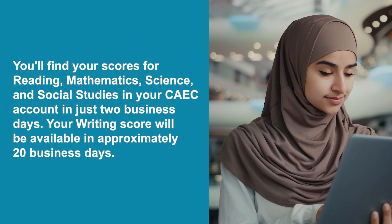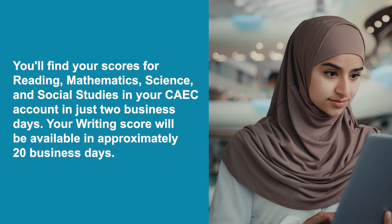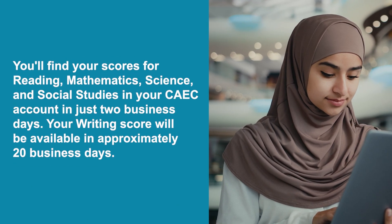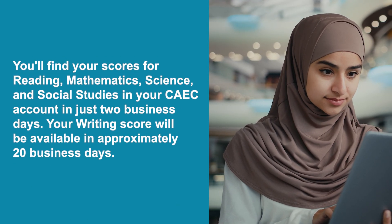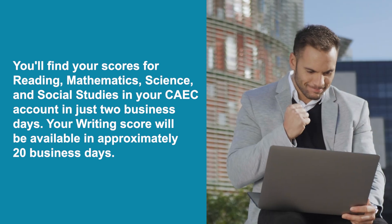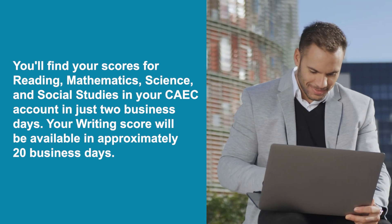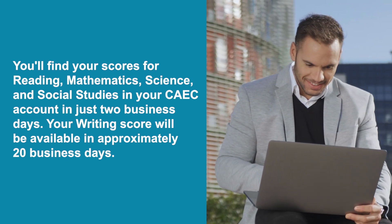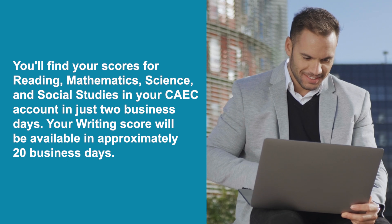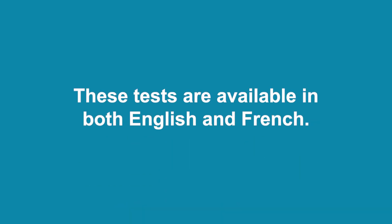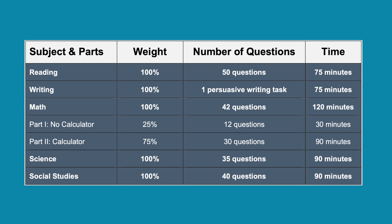You'll find your scores for reading, math, science, and social studies in your CAEC account in just two business days. Your writing score will be available in approximately 20 business days. Make sure to check your account. These tests are available in both English and French.